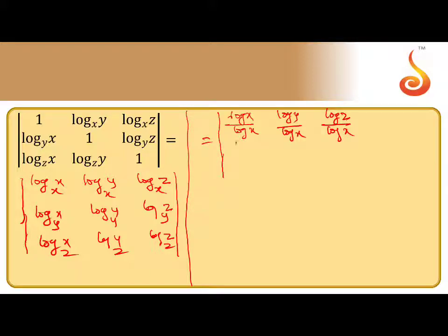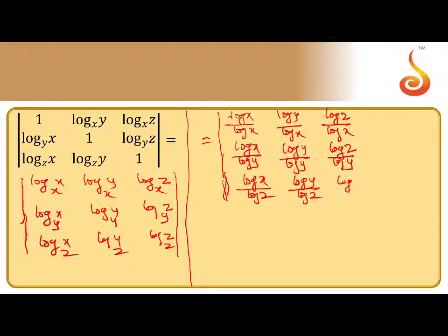So next step, second row: log x by log y, log y by log y, log z by log y. And third row, same logic: log x by log z, log y by log z, log z by log z. You got it here.